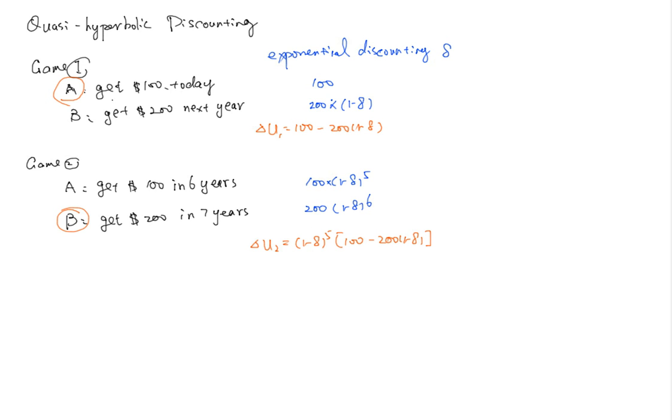Now if you choose option one in game A in game one, that means this value is larger than zero. So by the same token this has to be larger than zero. And our delta, let's say is from zero to one for any normal people that would be the case and this will be larger than zero as well. So U2 is also larger than zero.